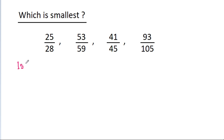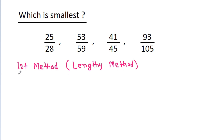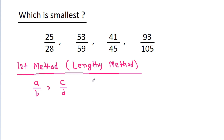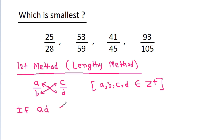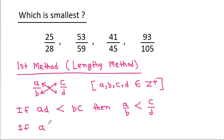The first method is the Lendy method. If we have to compare A/B and C/D, where A, B, C, D are positive integers, then we cross multiply these numbers. If A times D is less than B times C, then A/B will be less than C/D. And if A times D is greater than B times C, then A/B will be greater than C/D.